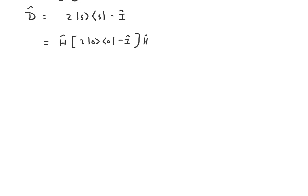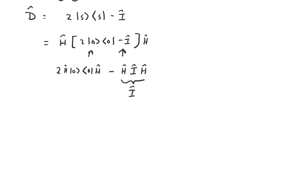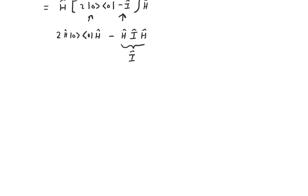This operator can be broken up into two simpler operators using the linearity of linear transformations. The first piece is going to be 2 times H times the projection onto |0⟩ times H again. The second piece is going to be negative HIH, which is just the identity operator because H is its own inverse. So this is looking closer to our original expression for D. We will have shown equivalence if we can show that H times the projection operator onto |0⟩ times H again equals the projection operator onto S.